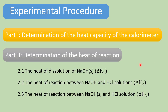The experiment procedure is designed in two parts. Part one: determine the heat capacity of the calorimeter. Part two: determine the heat of reaction — delta H1, delta H2, and delta H3.